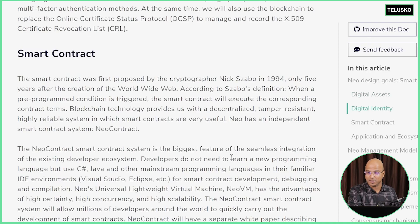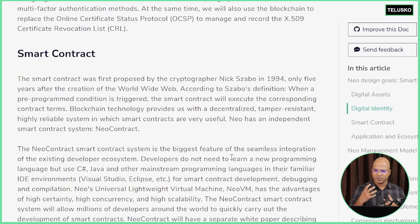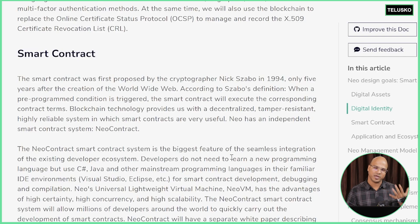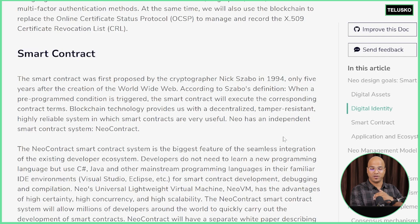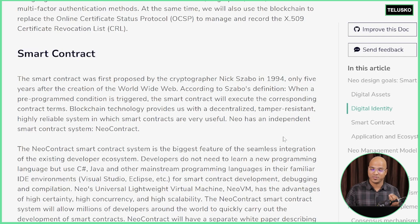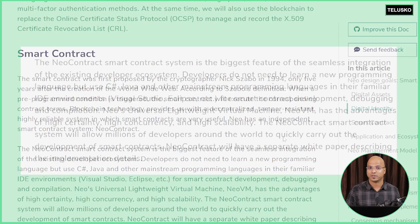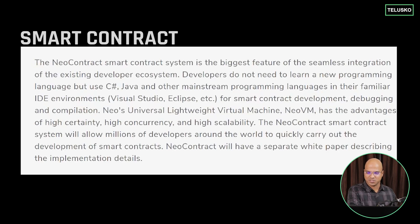Smart contract is actually not a new term — it's been around for a long time. Even before Bitcoin, there were thoughts of using smart contracts and smart economy. This term was coined by Nick Szabo in 1994. A smart contract is basically a contract — if a particular condition is met, you execute it, and if it happens automatically with the help of programs, that's a smart contract. In NEO, to achieve this, we have something called NEO contract, which is a smart contract system and one of the biggest features in the developer ecosystem for blockchain.